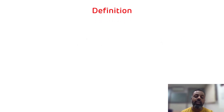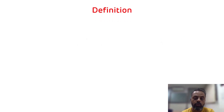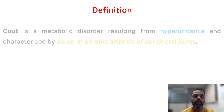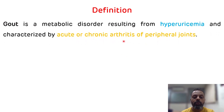First we will see the definition of gout. Gout is basically a metabolic disease which occurs due to hyperuricemia, that is increased uric acid production, and it is characterized by acute or chronic arthritis of peripheral joints. That is the definition of gout.